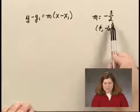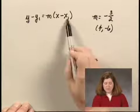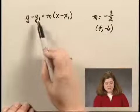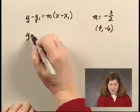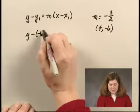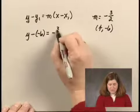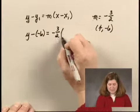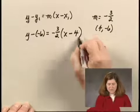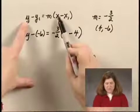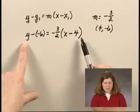I will substitute -3/2 for m, 4 for x₁, and -6 for y₁. So I have y minus -6 equals -3/2 times (x minus 4). Notice that the y and the x are the variables, and they stay in after I've substituted in the equation.